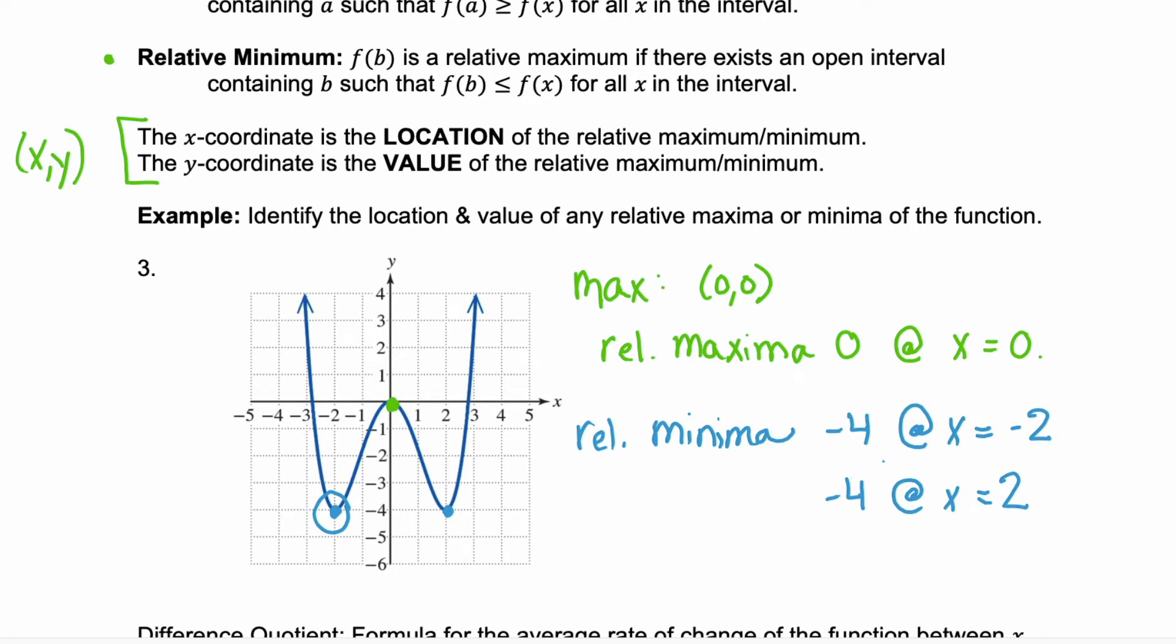So the location of our minima is negative four and the value is negative two or I totally said that backwards. So the location of our minima here are at negative two and two and the value of that minima is negative four.